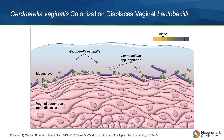Vaginal dysbiosis begins with initial colonization by a virulent strain of Gardnerella vaginalis or other Gardnerella species, a microaerophilic and facultative anaerobe. This colonization typically follows a sexual exposure. Gardnerella, unlike other BV-associated bacteria, which are strict anaerobes, can tolerate the high redox potential of a Lactobacillus-dominated vaginal microbiota.